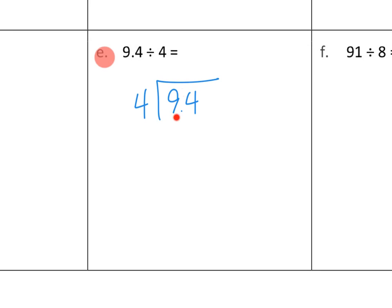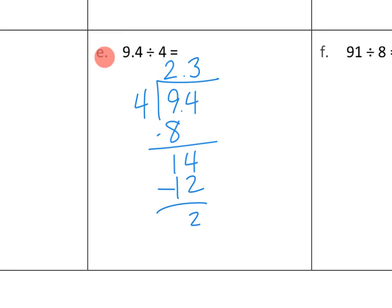We've got our dividend 9.4 and our divisor 4 — dividing into 4 equal groups. Our biggest unit is ones: 9 ones divided across 4 equal groups. We can put 2 ones in each group, which uses up 8 of our ones, leaving 1 one remaining. Let's decompose that into tenths. We had 4 tenths already, and converting the remaining 1 one gives us 10 more tenths, so now we have 14 tenths. With 3 tenths in each group, 3 times 4 is 12, using up 12 tenths, leaving 2 tenths.